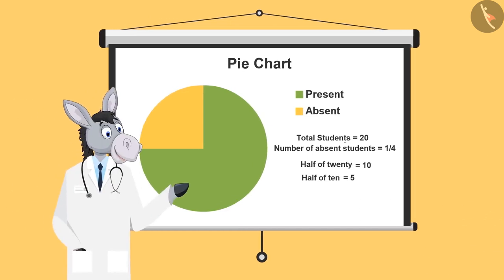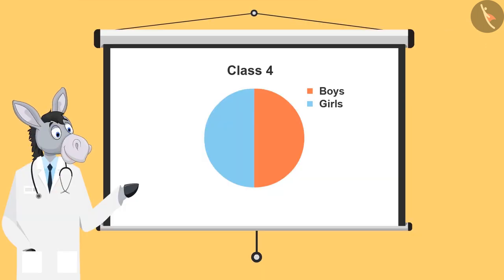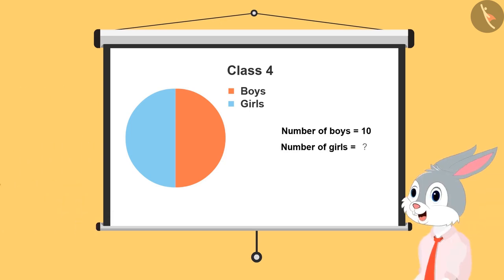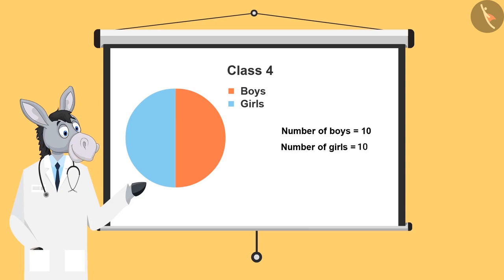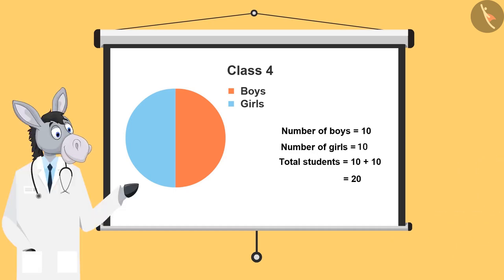Very good. Now let's look at one more example. Now all of you look at this chart and think, if there are half boys and half girls in a class and the number of boys is 10, then what will be the number of girls? Ten. Right. So what is the total number of students in the class? 10 and 10, it's 20. Very good.